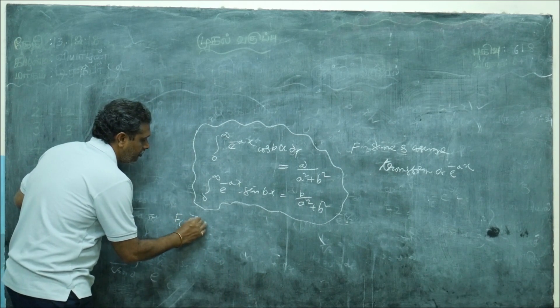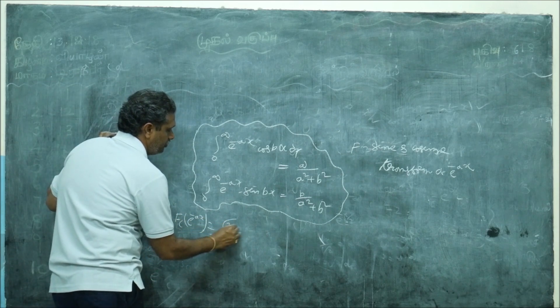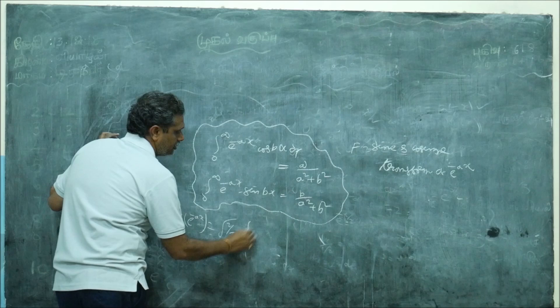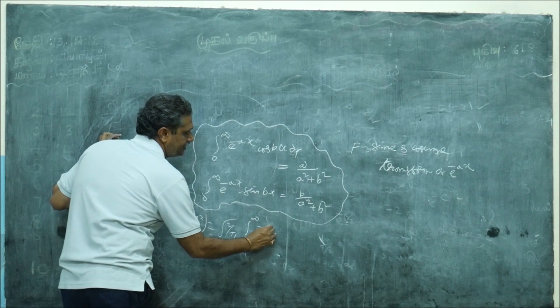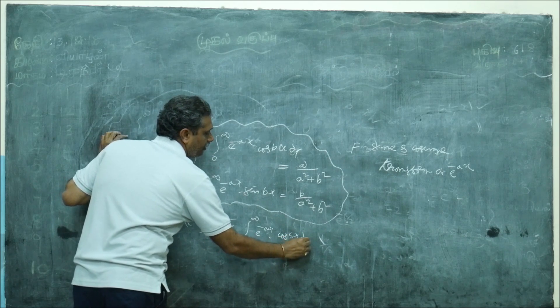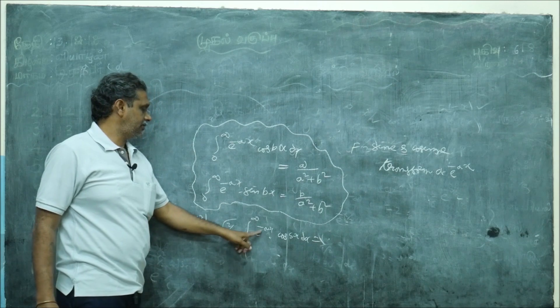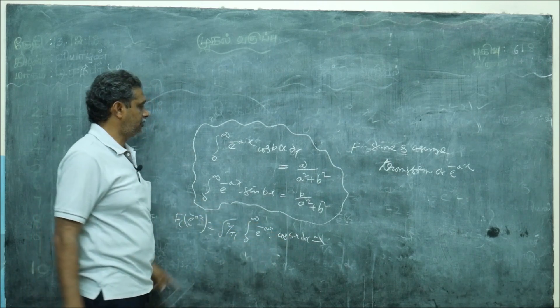Fc of e power minus a x. So, as you know, the formula is root 2 by pi, 0 to infinity, e power minus a x cos s x. See, I gave a formula in terms of b, instead of b who is there? s. Now, e power minus a x cos s x, what you will write?